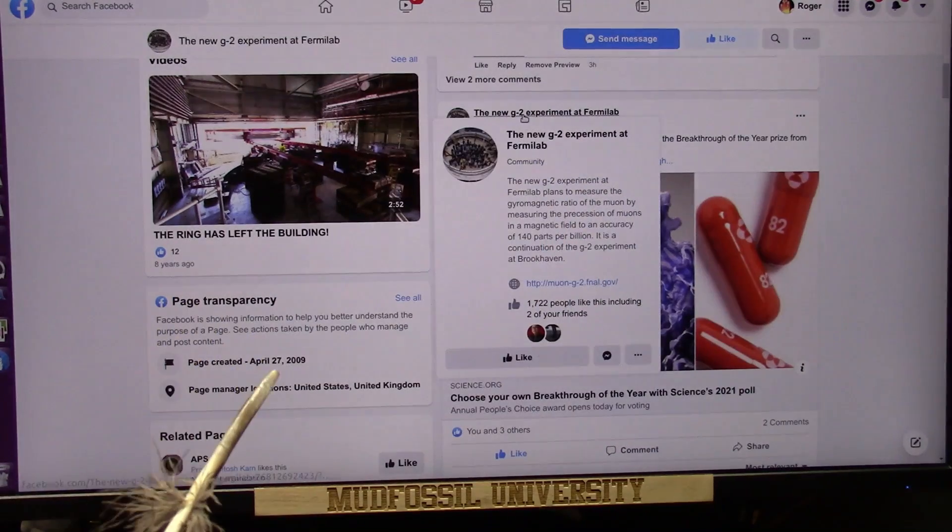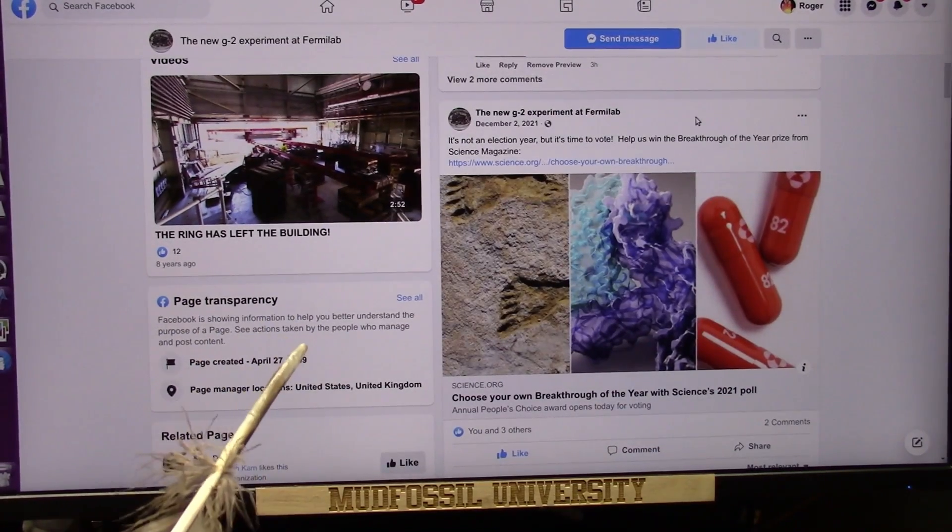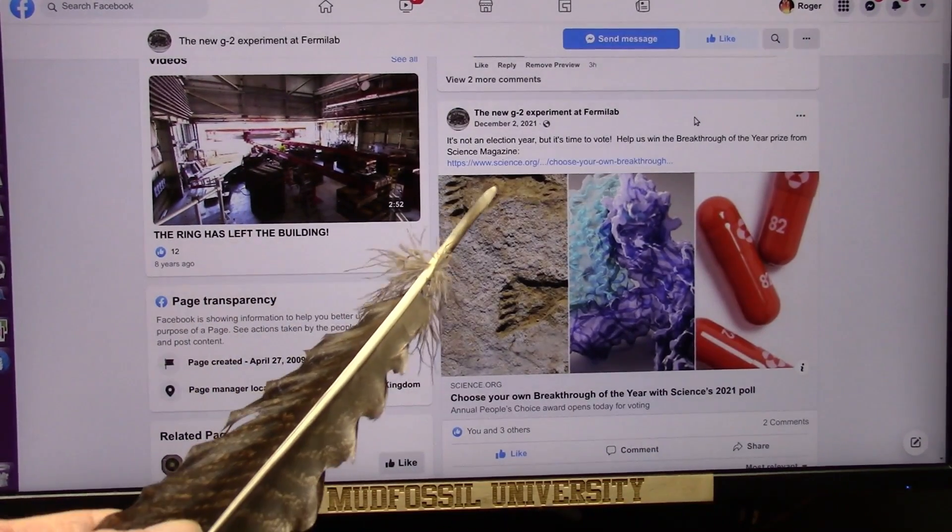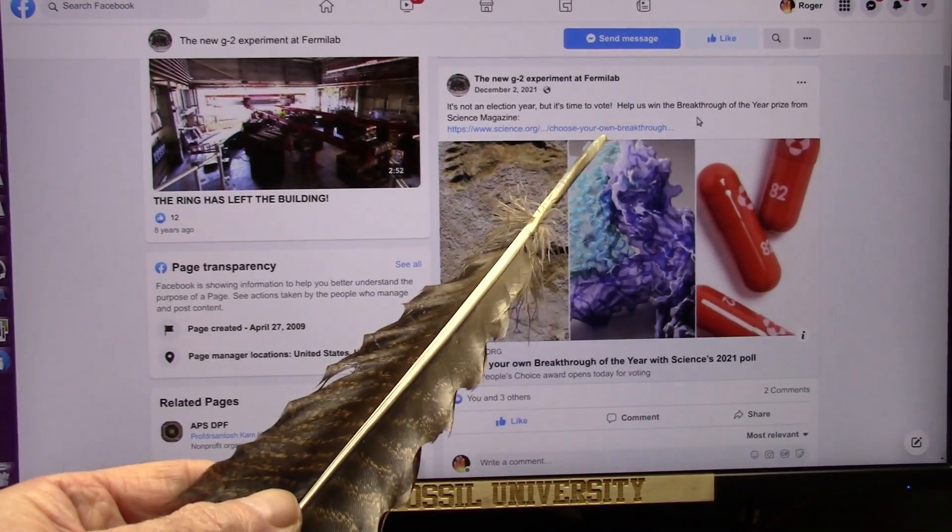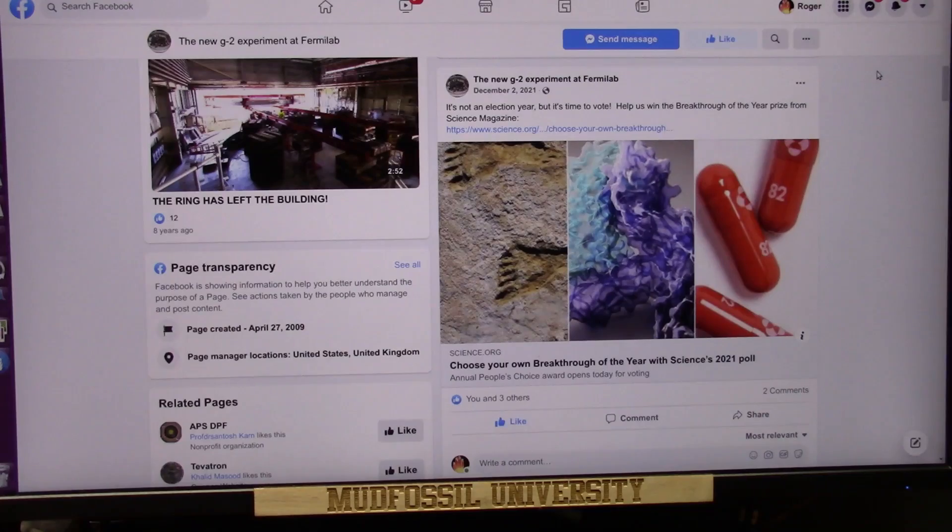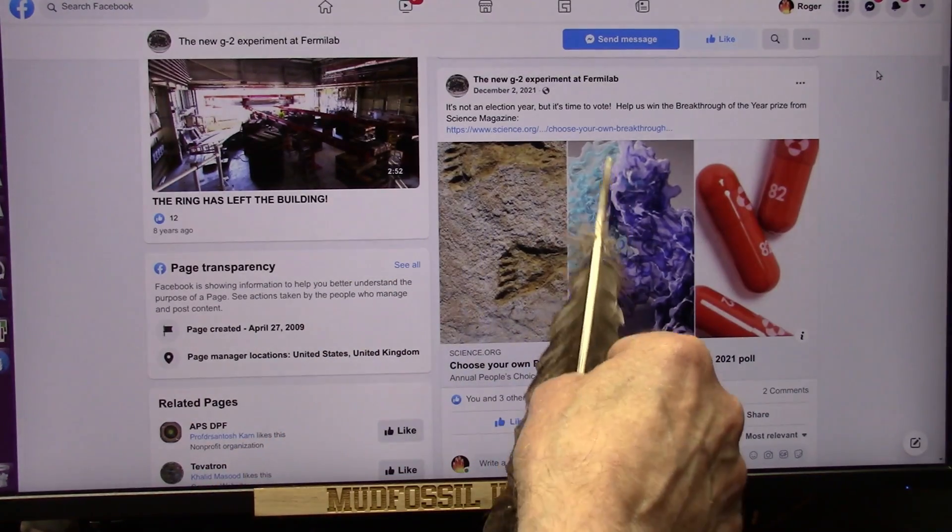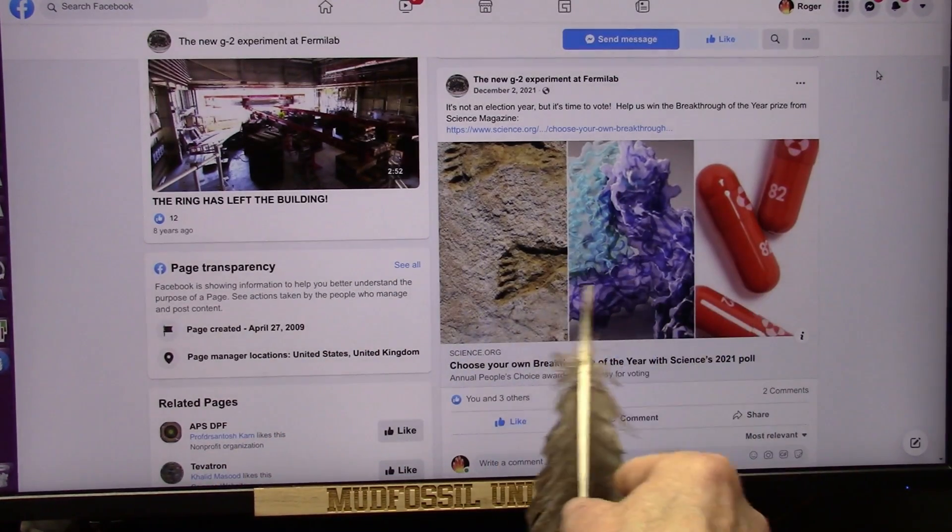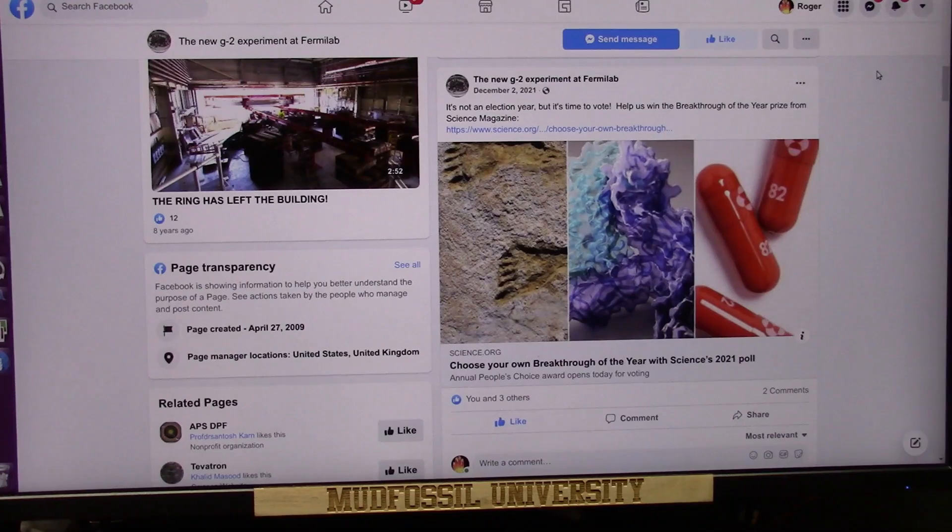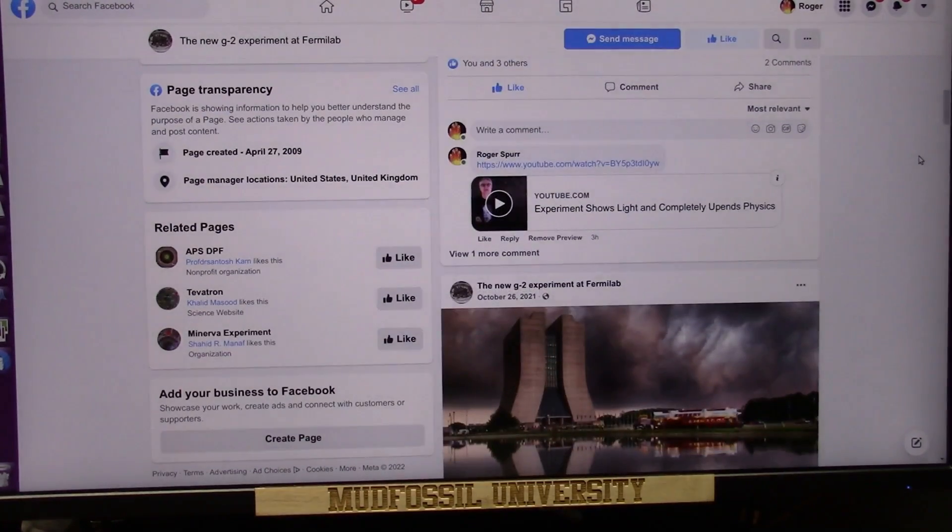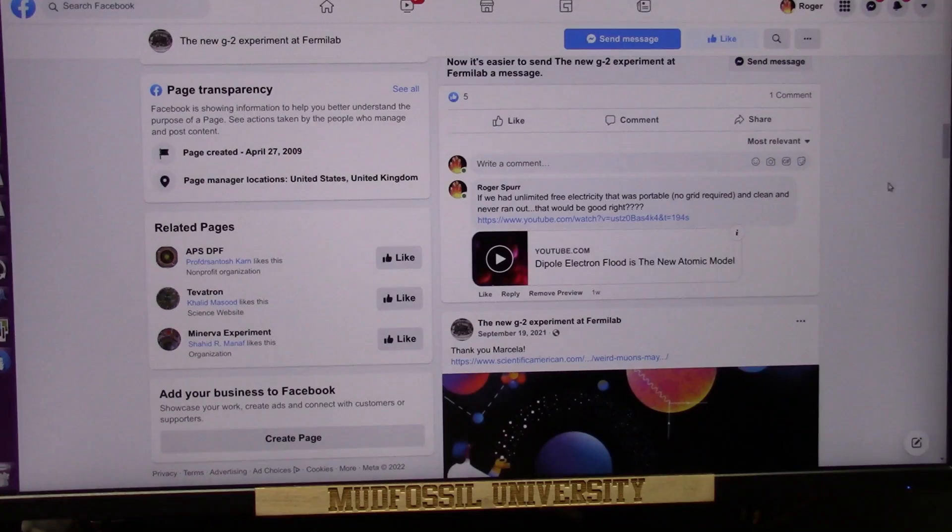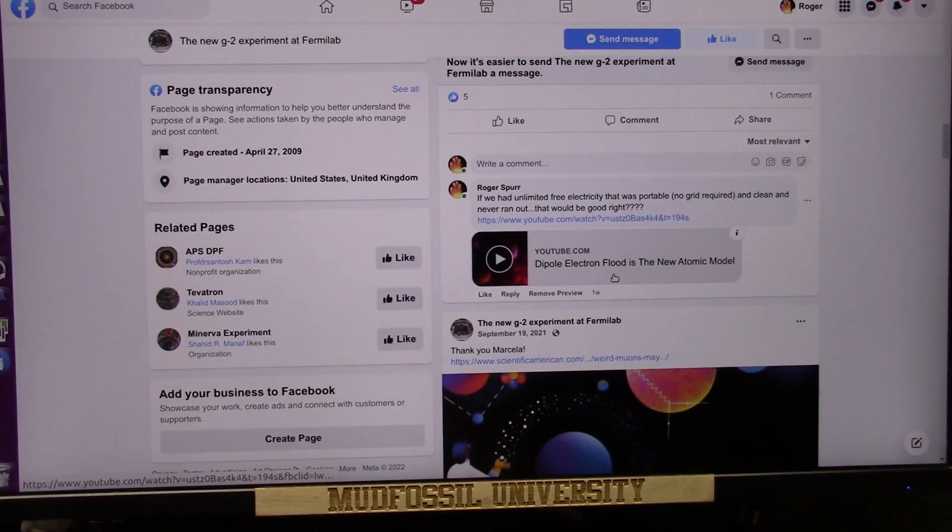The new G2 experiment at Fermilab says it's not an election year, but it's time to vote. Help us win the breakthrough of the year prize from Science Magazine. They're talking about our ancient past and all kinds of drugs and anything in science, especially this G2 muon thing that they're doing, and I've been commenting on it and showing these dipole electron floods.